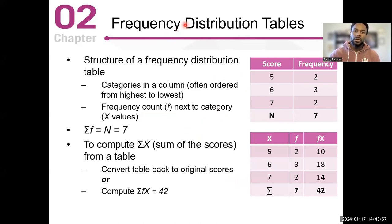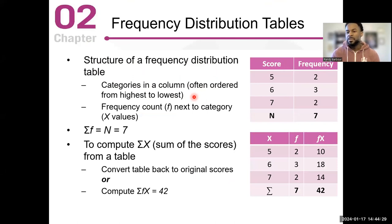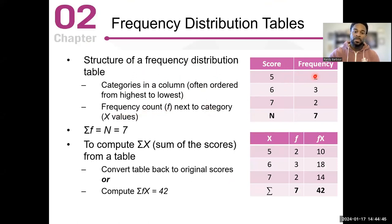When you think about a frequency distribution table, the structure is very, very standard. In the previous example you had your scores in the first column and your frequencies in the second column. The categories are often ordered from highest to lowest or lowest to highest — it just depends on how you want to depict the information. Your frequency count, or F, is going to be next to the category of x-values. This could be your x-values or even categories like freshman, sophomore, junior — nominal variables or scores.